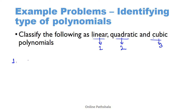Let us look at the first one: x² + x. The degree of this polynomial is the maximum value of the exponent of the variable, which is two. So this is a quadratic polynomial.